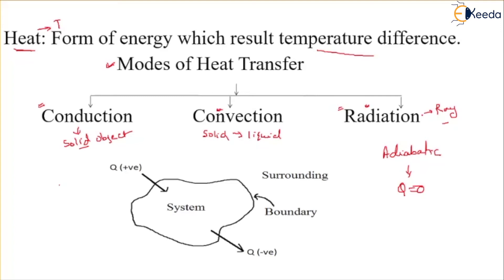In a non-adiabatic process, work is defined by a particular path between the initial and final state. Heat transfer in a non-adiabatic process involves energy transfer due to temperature difference, where one type of energy interaction is defined on the basis of variation in properties like pressure and volume, and another on the basis of temperature. Since heat depends on the variation of temperature, heat is also a path function.